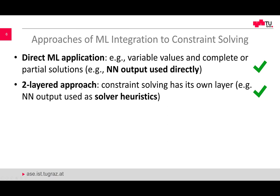Then we have the two-layered approach, where the machine learning results are given to a constraint solver in an indirect fashion. Machine learning could learn relevant variable settings — especially in recommendation scenarios — but then the result of the machine learning process is given to a constraint solving process in terms of search heuristics, for example as variable-value orderings passed to a solver. If the solver is complete, this helps to assure completeness and the identification of a solution. The problem we have with direct machine learning is not present in this sense with the two-layered approach.